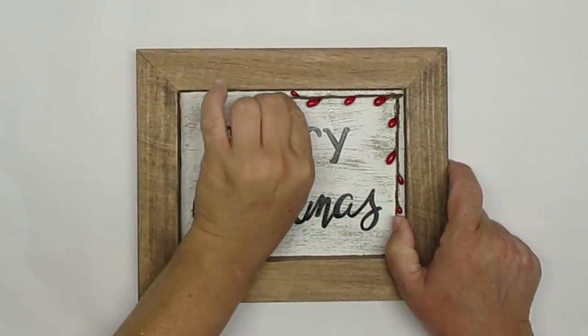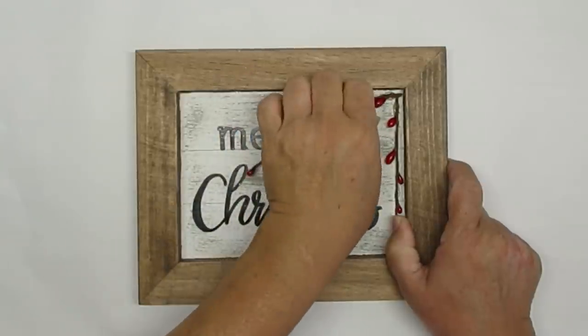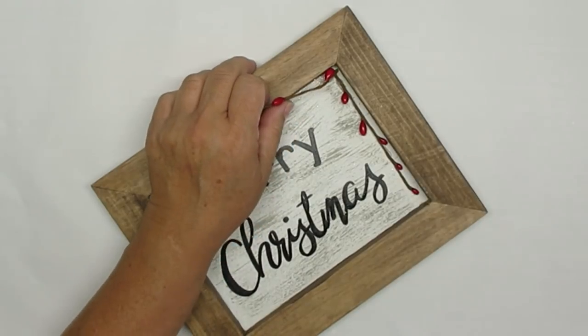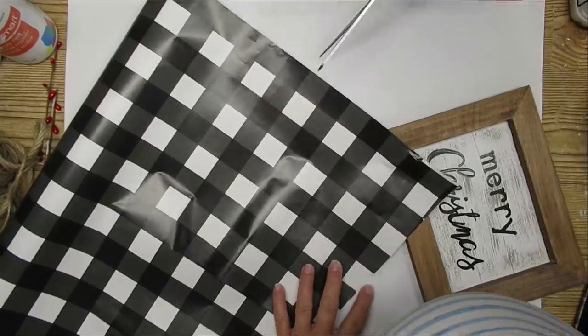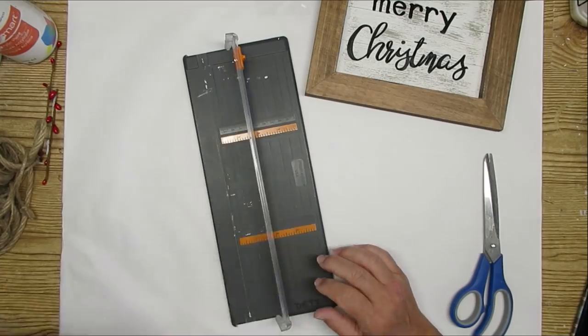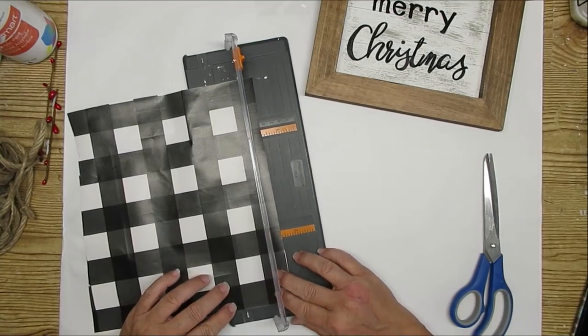My second project is repurposing this wood panel frame that never got completed, and I'm just going to remove these berries and then get started. Using some buffalo check wrapping paper, I'm going to cut a piece out that will fit right inside the wood panel, and that will be my background.